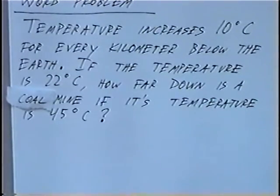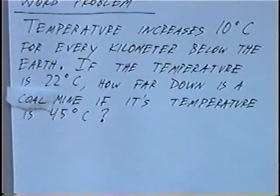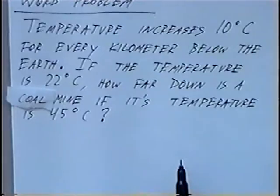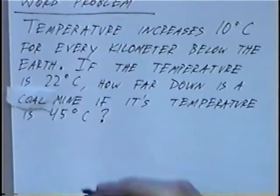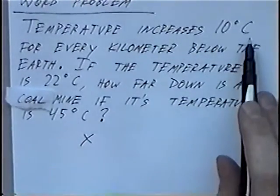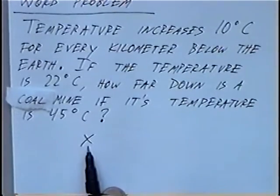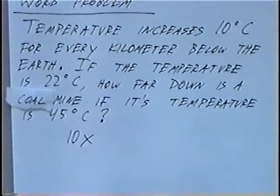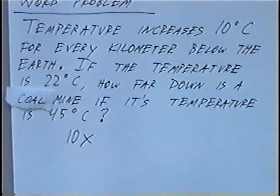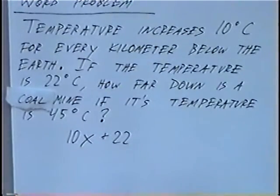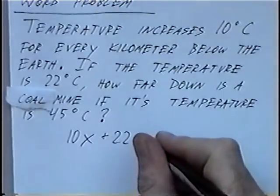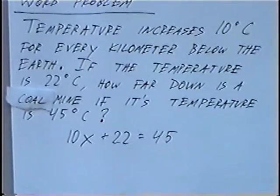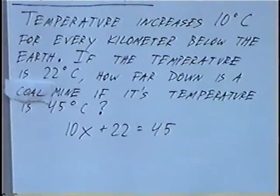Temperature increases 10 degrees Celsius for every kilometer below the earth. If the temperature is 22 degrees Celsius, how far down is a coal mine if its temperature is 45 degrees Celsius? For this word problem, we can write an equation and solve for a variable. How far down the coal mine is can be represented by x. Since it's 10 degrees for every kilometer, that would be 10 times x. The starting temperature is 22 degrees, so we add 22. The final temperature is 45. So the equation is 10x plus 22 equals 45.